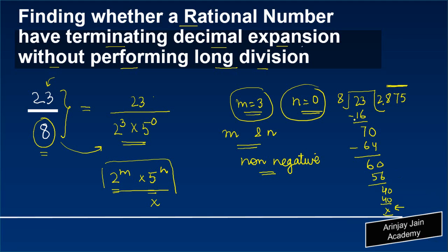Instead of doing this long division method, we could have found this by simply putting the denominator in the form 2 to the power m into 5 to the power n. If it can be expressed such that m and n are non-negative integers, that means this rational number has a terminating decimal expansion.